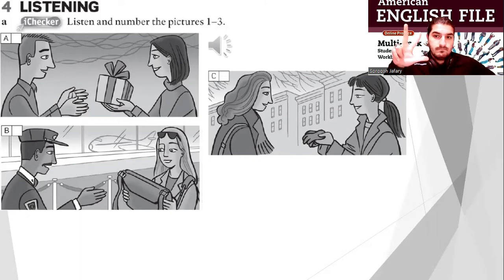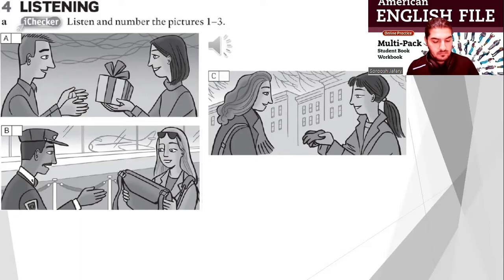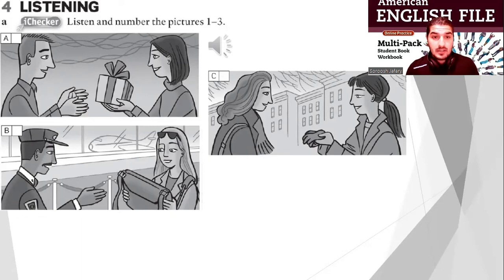Dialogue three: 'Hi Robert, happy birthday!' 'Is it for me? Thanks. What is it?' 'Sit down and open it.' 'A watch! Thanks, it's great.' Well done. Check with your partner. Let's check the answers.